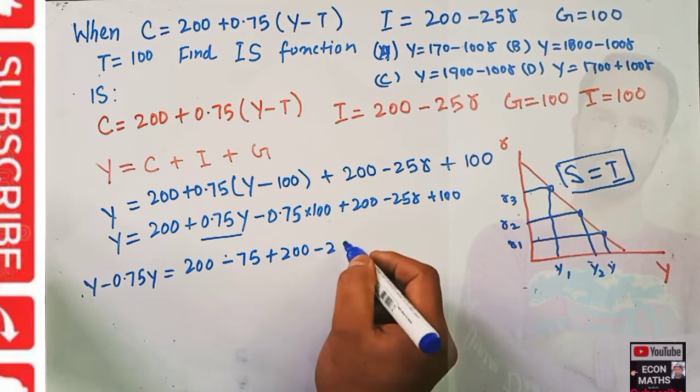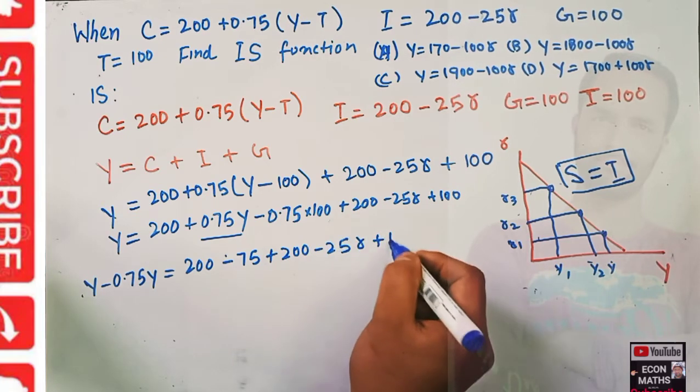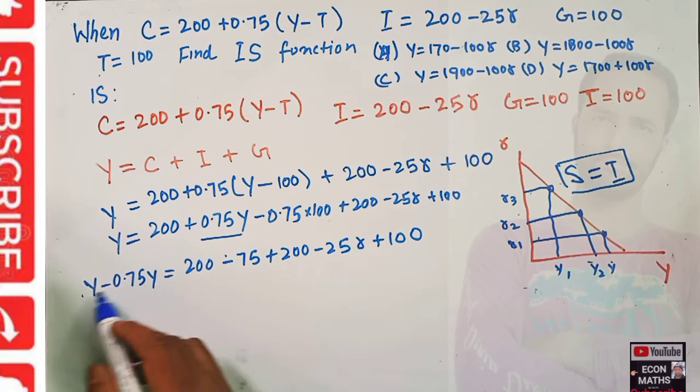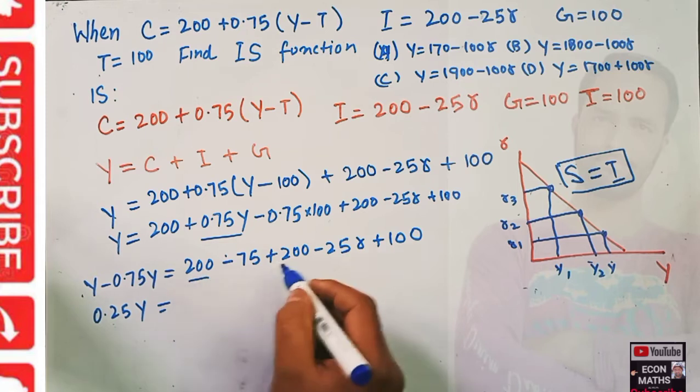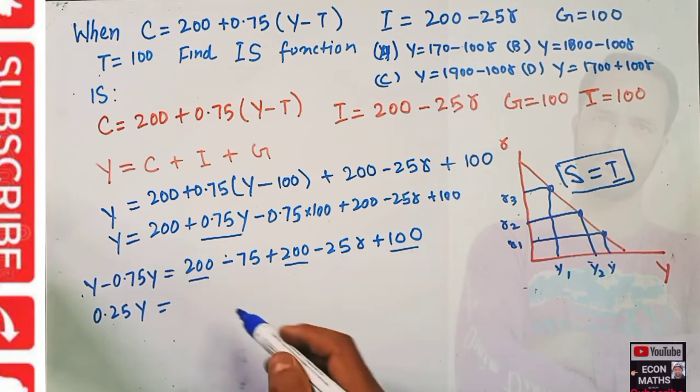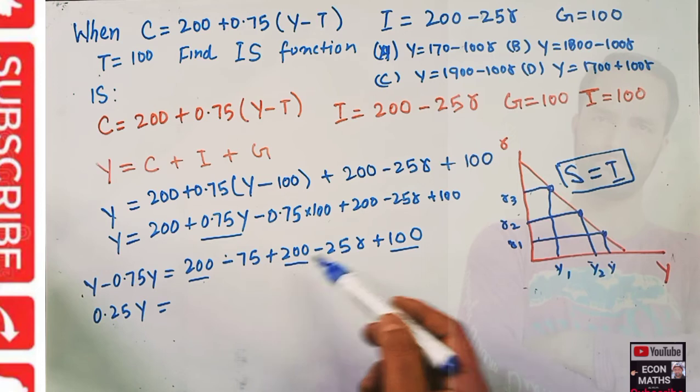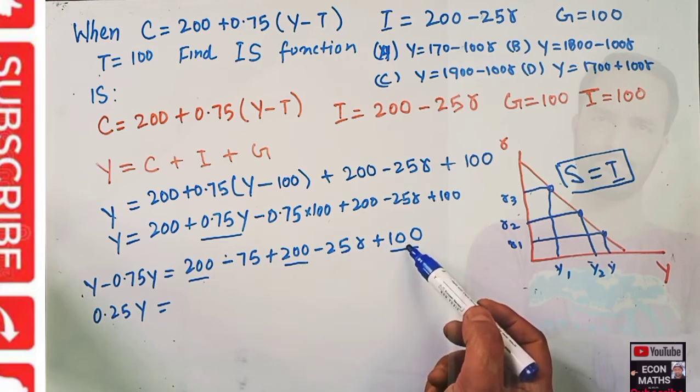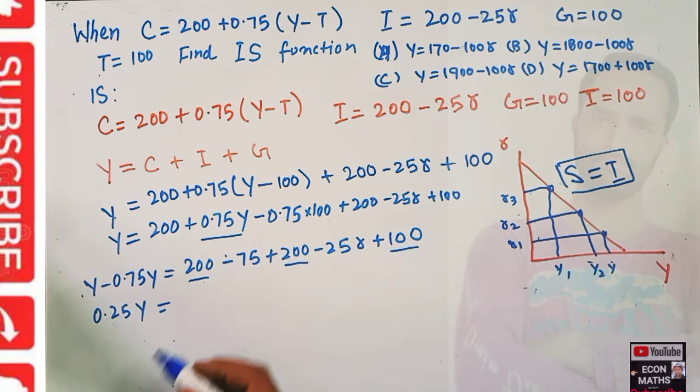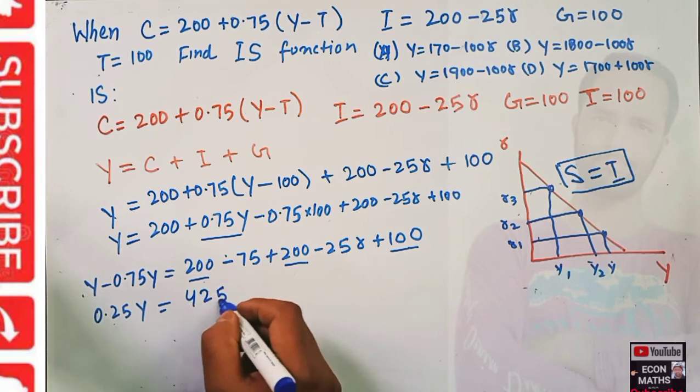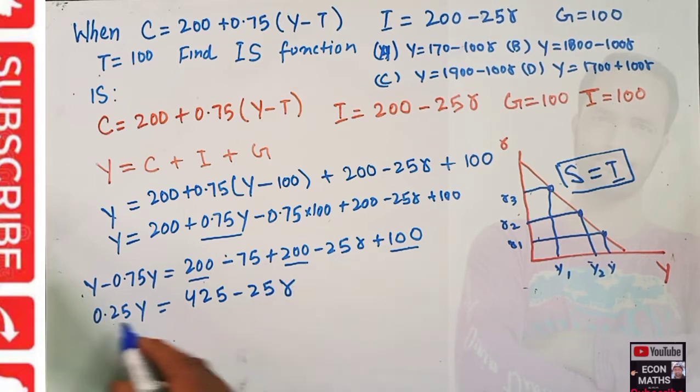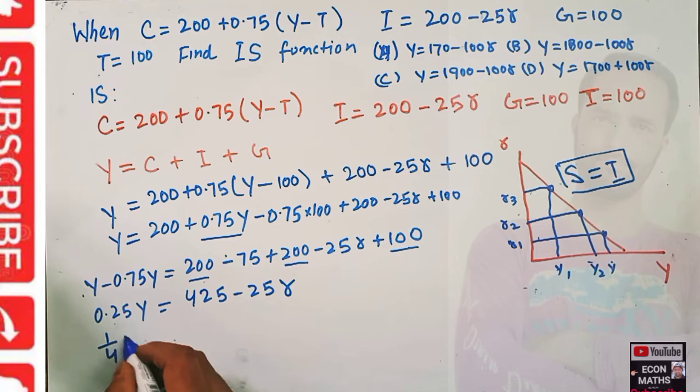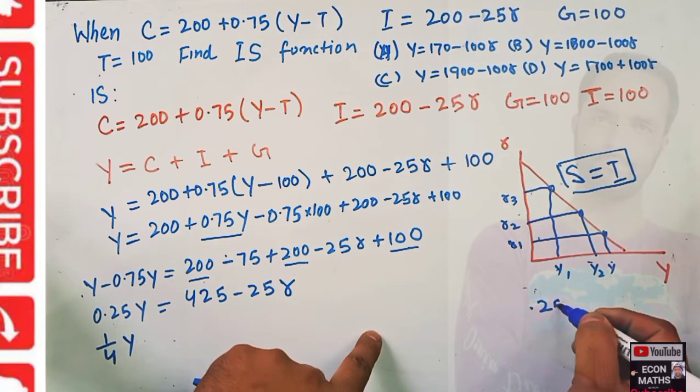When we subtract 0.75 from Y we get 0.25Y = 200 + 200 + 100 minus 75, which is 500 minus 75, so we have 425 minus 25r.